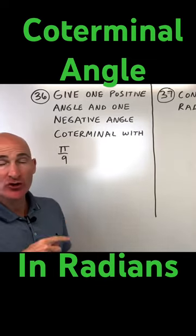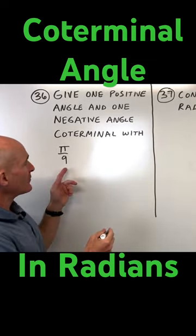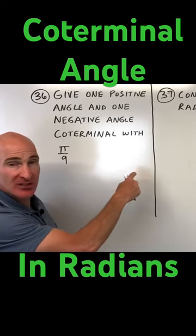Co means same, terminal means where it terminates or stops. And if you think about an angle, if you add 360 degrees,